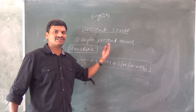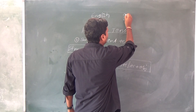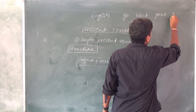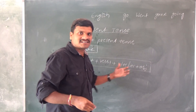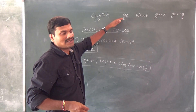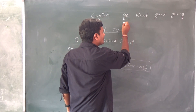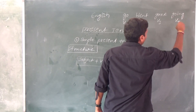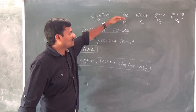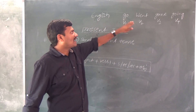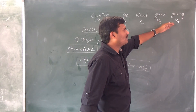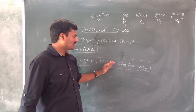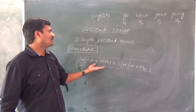You know that verb one means what? For example, take the simple verb 'go' — the second form is 'went', third is 'gone', fourth is 'going'. For easy understanding of English, we divide the verb into four forms. We call them V1, V2, V3, and V4, meaning verb one, verb two, verb three, and verb four. The structure is: Subject + V1 + s/es/ies + Object. This is the structure of simple present tense.